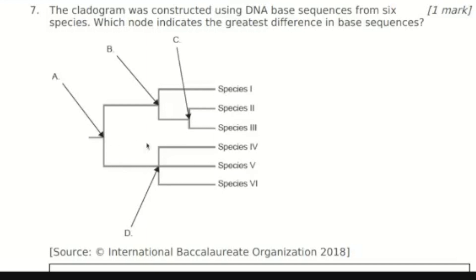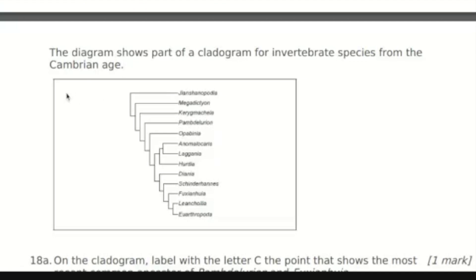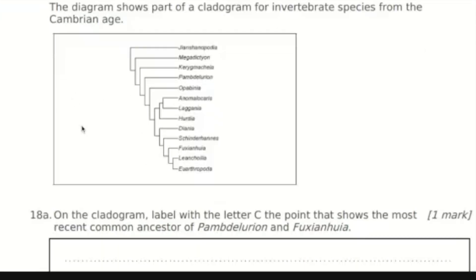The more ancient you go, the further back you go in this family tree, the less the connection you're going to have. In this next question, the diagram shows part of a cladogram for invertebrate species from the Cambrian age, which is an ancient time. The task is to label the letter C at the point showing the most recent common ancestor of Pamblodurion and Fushianhuia. Even if you can't pronounce those names, it doesn't matter — just call them P and F.